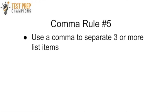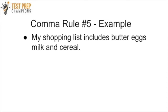Comma rule number five is to use a comma to separate three or more list items. For example: 'My shopping list includes butter, eggs, milk, and cereal.' There are several commas missing here — we would want a comma after butter, after eggs, and after milk.